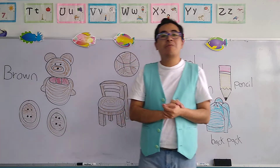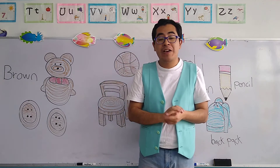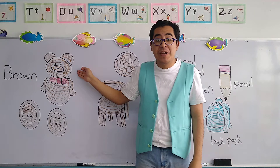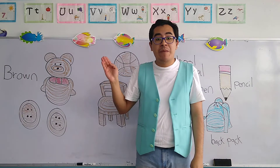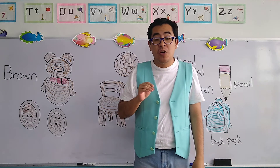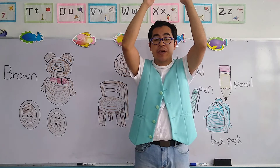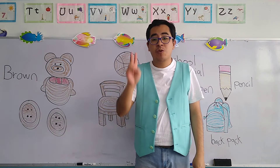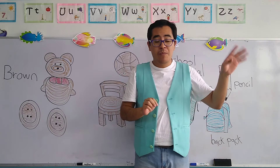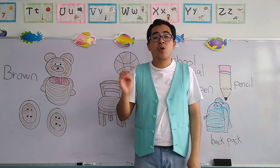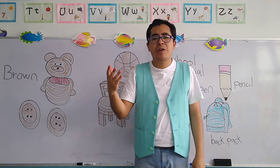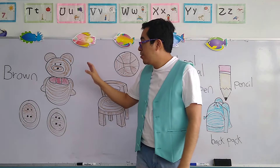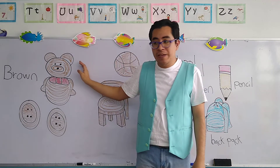The first object that has color brown, as you can see here, is the bear. Now the bear — remember it's an animal of the jungle and it's a very big animal. Most of the bears have two colors. They are either color black or color brown, but the most common color for bears is color brown. So that's why we put it right here.